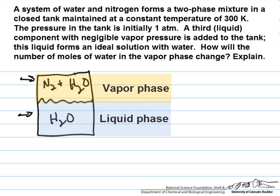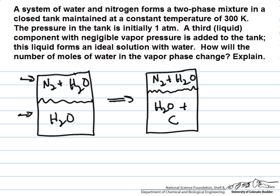Then we add a third liquid component with very low vapor pressure. Our new illustration shows another component that's in the liquid phase but not in the vapor phase.